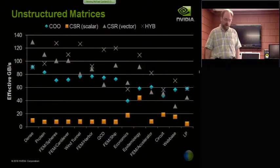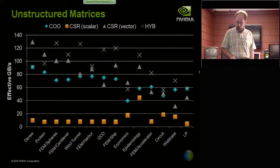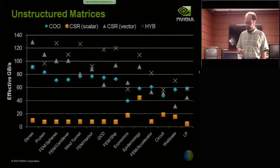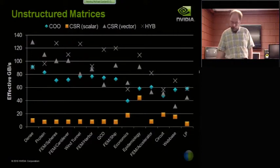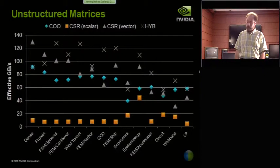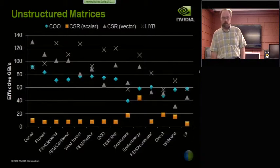So is this diagram answering the earlier question about how the ELL or the hybrid kernel performs on power law networks? Because that web base at the right, I believe, is a power law network, more or less. I don't hear a no, so I'll assume yes.